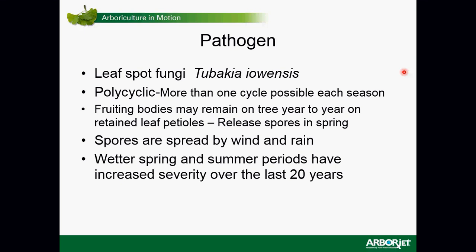Tubakia iowensis is a polycyclic fungus — in other words, more than one cycle is possible, possibly two species. There can be infections at different times during the growing season. The fruiting bodies of the disease may remain on the tree from year to year on retained leaf petioles. If the spores are right next to next year's expanding leaves and we get a rainy spring, those spores are right next to these emerging soft, tender leaves — that really increases the likelihood the disease will spread throughout the canopy.